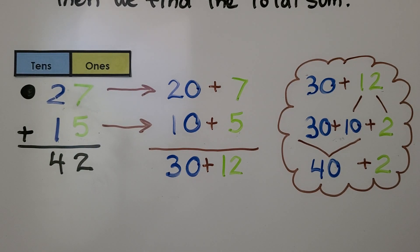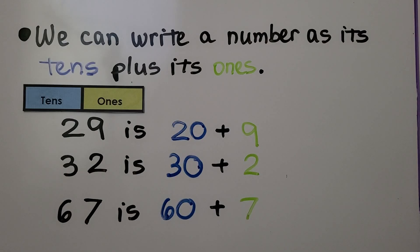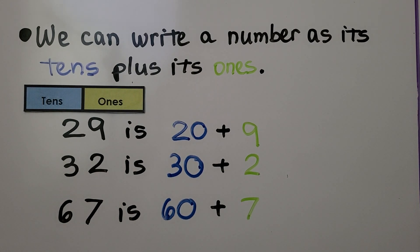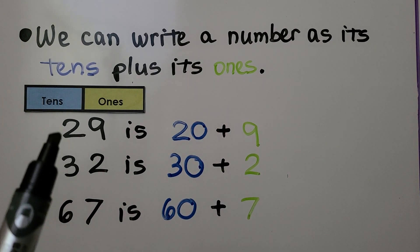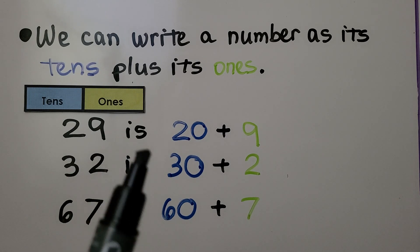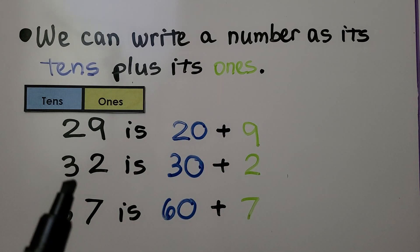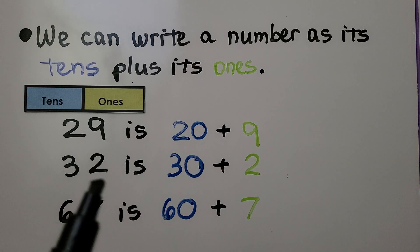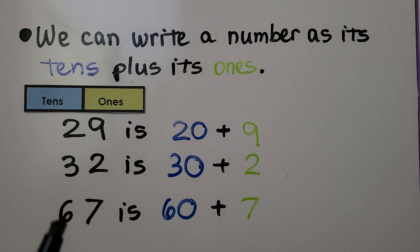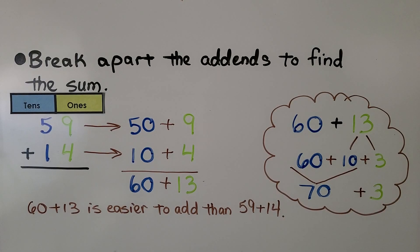We can write a number as its tens plus its ones. 29 has two tens and nine ones, so it's 20 plus 9. 32 is three tens and two ones, so it's 30 plus 2. 67 has six tens and seven ones, so 67 is 60 plus 7.